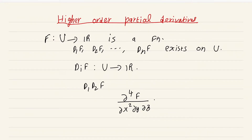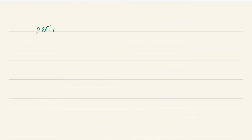We will use the more elegant multi-index notation, which will become very useful when we prove Taylor's theorem. So let me give the definition of multi-index notation. It is a bit involved and it takes a bit of getting used to, but once you get used to it, you will prefer this notation over the classical notation for partial derivatives.